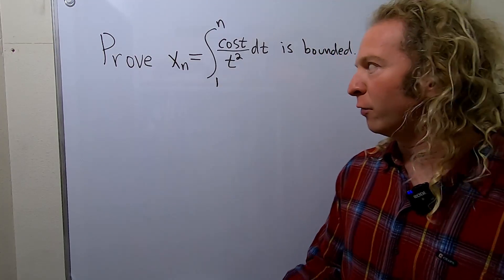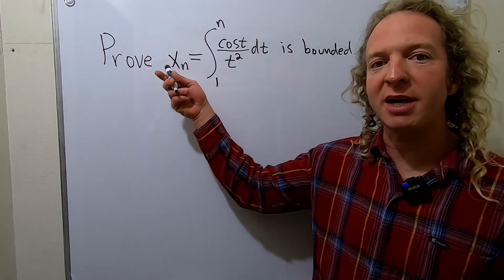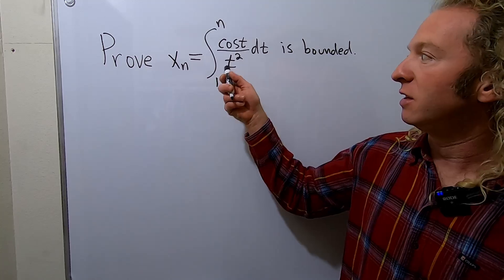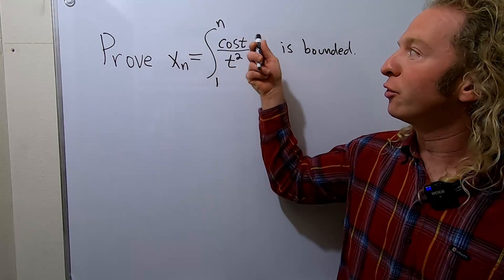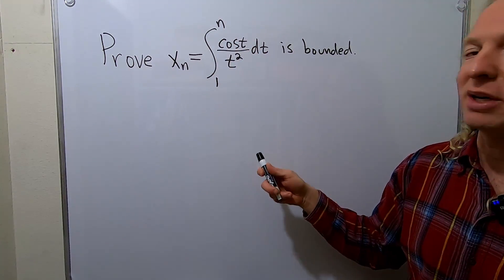Hi everyone, in this video we're going to prove that this sequence given by x sub n equal to the definite integral from 1 to n of cosine t over t squared is bounded.